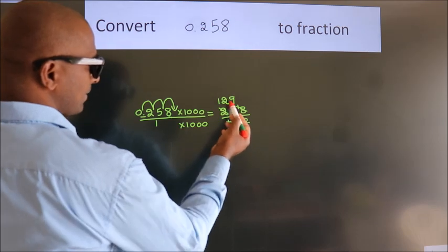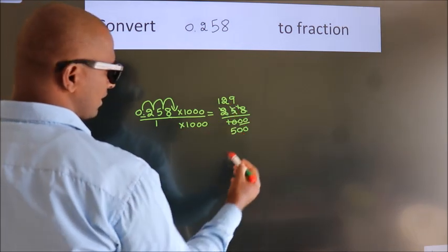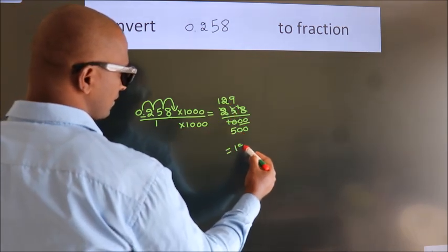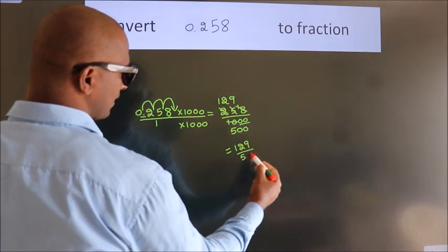Further cannot be simplified. So our fraction is 129 by 500.